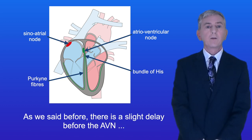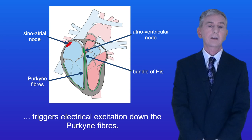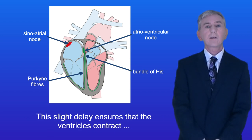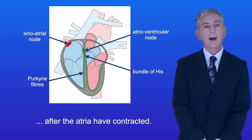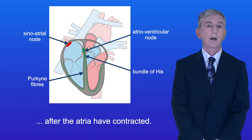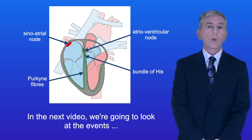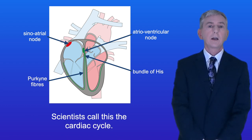There is a slight delay before the AVN triggers electrical excitation down the Purkinje fibers, and this slight delay ensures that the ventricles contract after the atria have contracted. In the next video we're going to look at the events taking place in the heart during the heartbeat, and scientists call this the cardiac cycle.